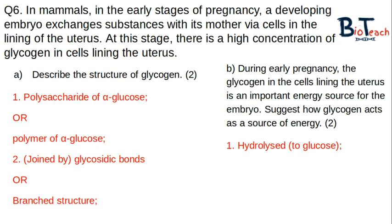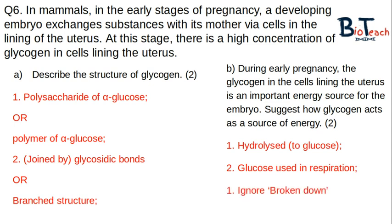It is two marks. For this question, you should say that the bonds are hydrolyzed, releasing glucose, and that glucose can be used in respiration — those two points are what they expect to achieve the two marks. An important note: a lot of students say 'broken down' instead of 'hydrolyzed' — that's not allowed. Broken down does not mean the same as hydrolyzed, so you would not get the first marking point. For the second point, they don't allow 'energy produced' — you have to say glucose is used in respiration, because by hydrolysis we're not producing ATP.